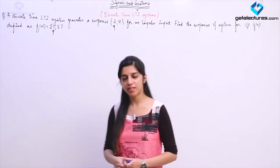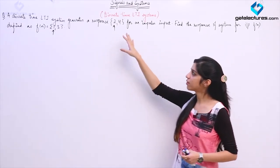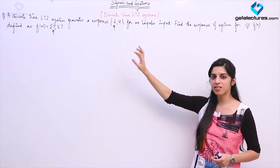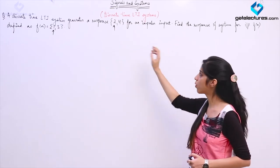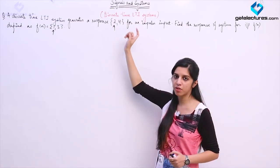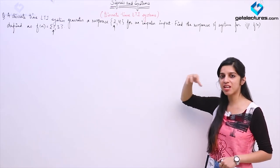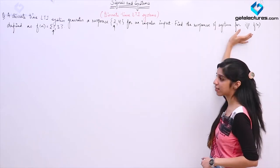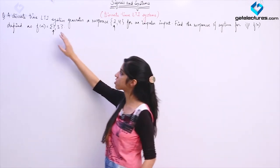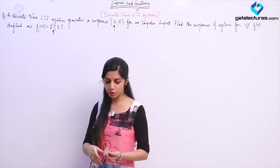Now we look at a question on discrete time systems. They have given that on supplying a discrete time system with an impulse input, we got 2, 4 as output. Now they are asking: if the input is changed to some signal fn, which is defined as 1, 3, then what is going to be the output?